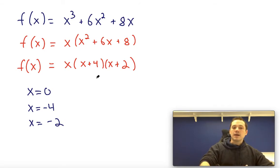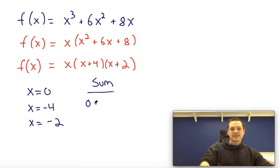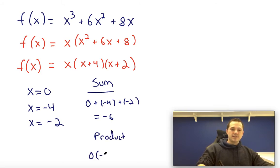Now if we wanted to find the sum of the distinct zeros, we would just add these numbers. So we would add 0 to negative 4 to negative 2, which would give us negative 6. And if we wanted to find the product, we would just multiply these numbers. So we would have 0 times negative 4 times negative 2, which would just give us 0.